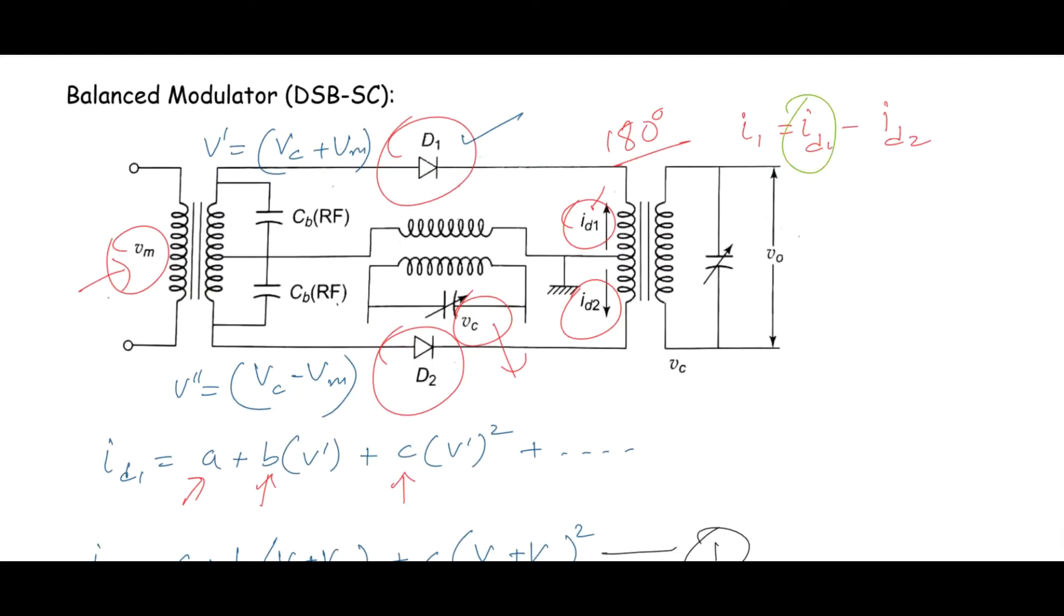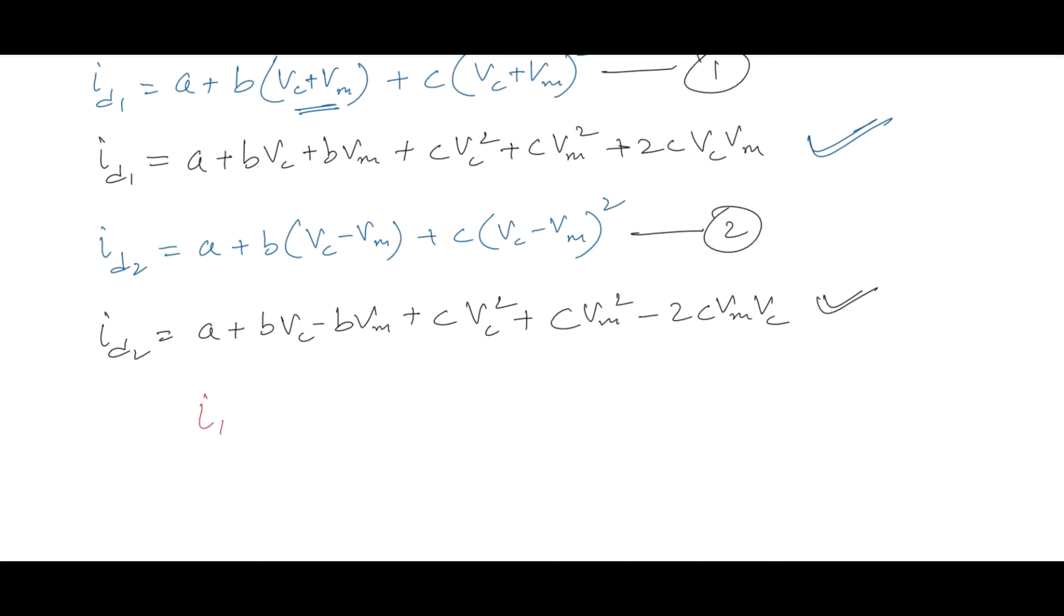Now as we know the value of ID1 and ID2, we can have this final current I1. So I1 will become equal to ID1 minus ID2. Now we will substitute these values. On performing subtraction we know that this term will go off, likewise this will cancel out. In similar way we'll have this canceled out, likewise this CVM² and CVM² will get canceled out. So we are left with only two terms. The current equation will become equal to 2BVM plus 4CVMVC.